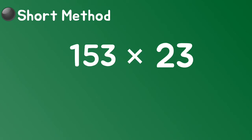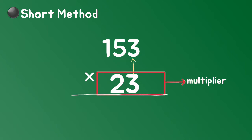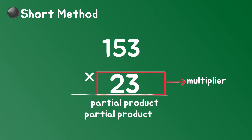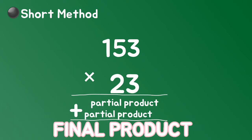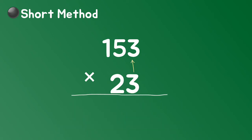Back to multiplying with regrouping. You will be following the same steps: start multiplying from the one's place of your multiplier, then the ten's place, and finally add the partial products to get the final product. The only difference is you will be encountering two-digit products to fill in your partial product. To get what I mean, here, let me show you how.